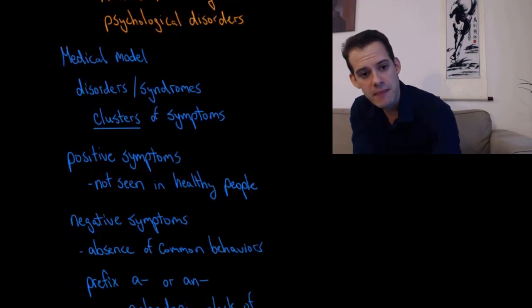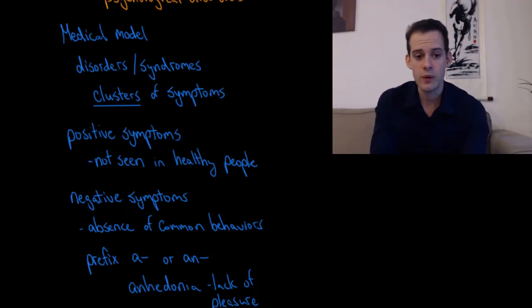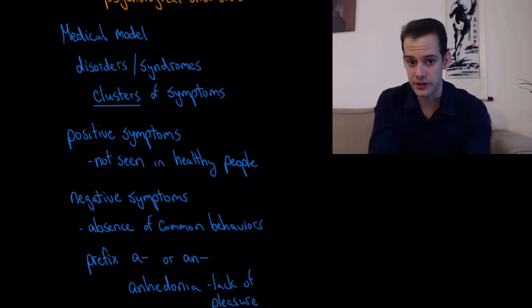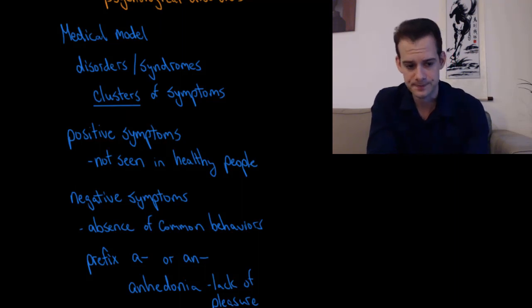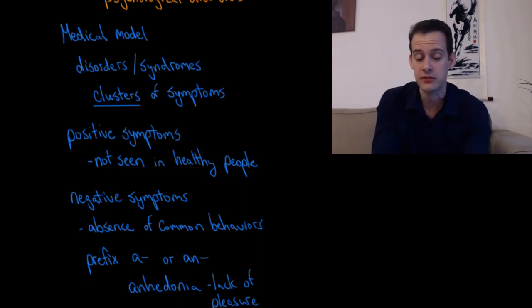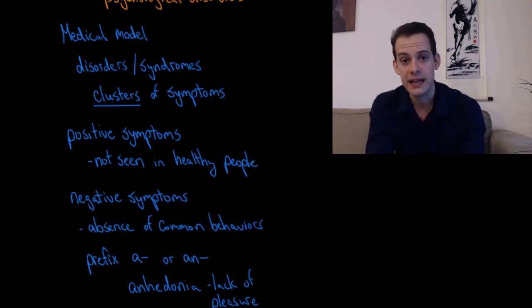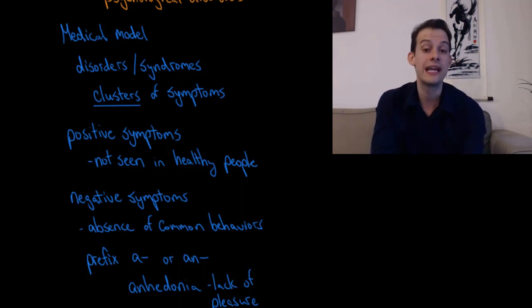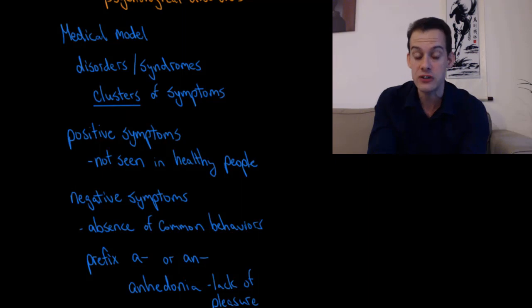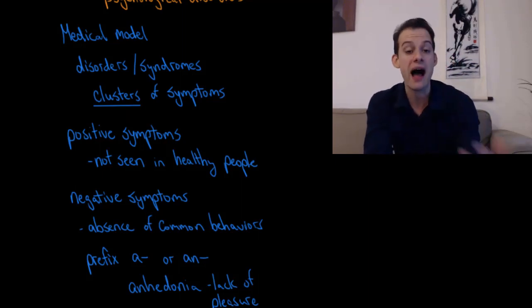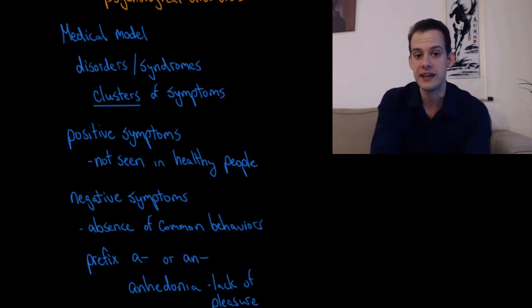Nevertheless, we apply what's called a medical model to the diagnosis of mental illness. The medical model holds that there are psychological disorders or syndromes, and that each disorder has a cluster of symptoms associated with it. By looking at the pattern of symptoms in a particular patient, the psychiatrist can determine which disorder the person has. These symptoms come in two main types: positive symptoms and negative symptoms. Positive symptoms refer to traits or behaviors not seen in healthy people. For example, a common positive symptom in schizophrenia is auditory hallucinations — some people with schizophrenia hear voices of people who are not there. This is not seen in healthy people, so when it appears, it's a sign of this particular disorder.